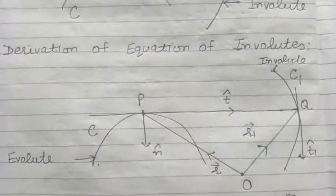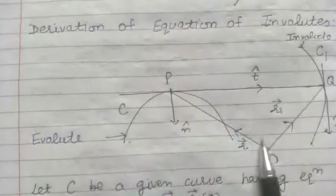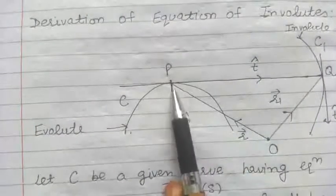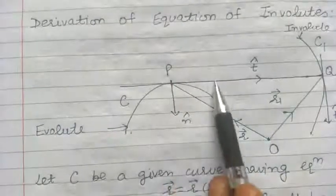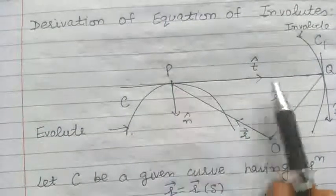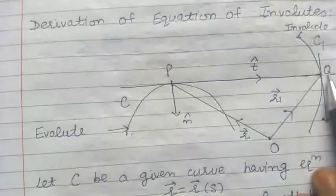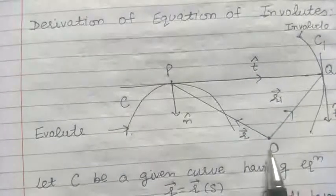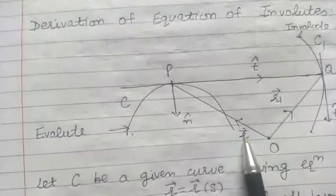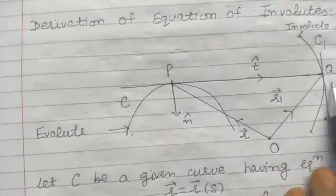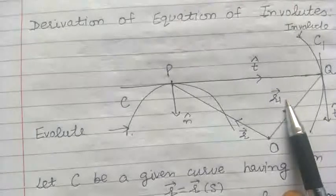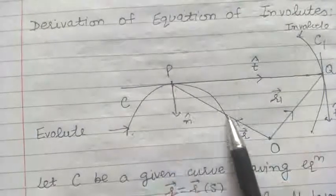Now we will derive the equation of involute. Let C be a curve and C1 another curve. P is a point on the curve C. We have drawn a tangent on the curve C at the point P, which meets the curve C1 at the point Q. Let O be the origin. The position vector of point P is the vector R, which is a function of parameter S, and the position vector of point Q is the vector R1 with respect to parameter S1.